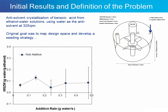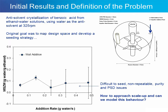What we actually saw is that there was very little variation in the metastable zone width as the addition rate increased, and the consistency of the metastable zone width measured deteriorated significantly at higher addition rates. This means it becomes very difficult to seed the process, because crystals can begin to nucleate at unpredictable times — meaning the seed may be added after nucleation has already occurred. This leads to a non-repeatable process and potential purity and particle size distribution issues. So the question became: how can this be scaled up, how can a seeding strategy be implemented, and can we model this behavior?